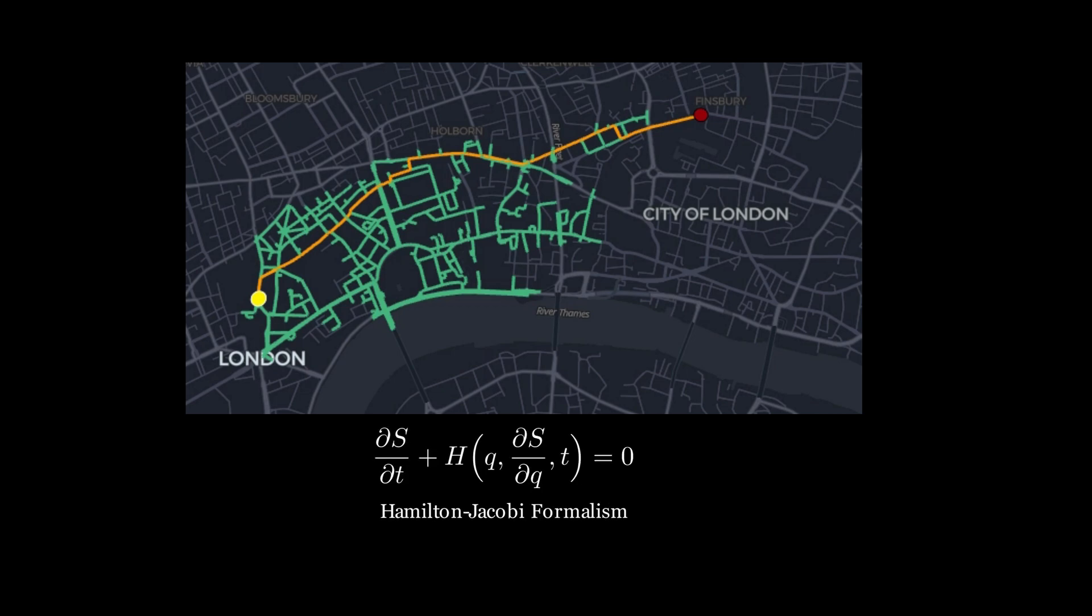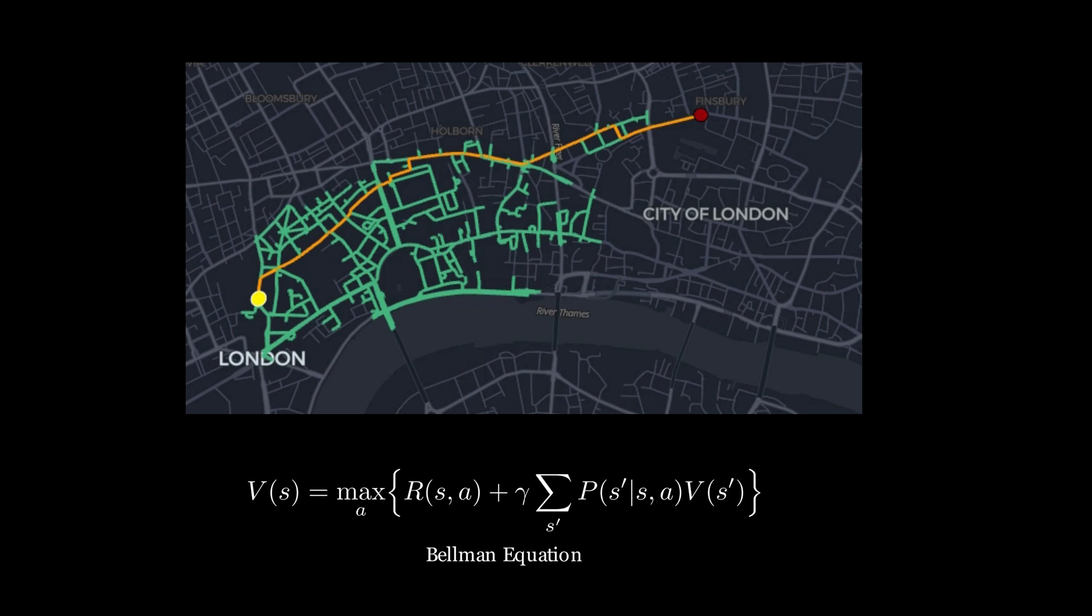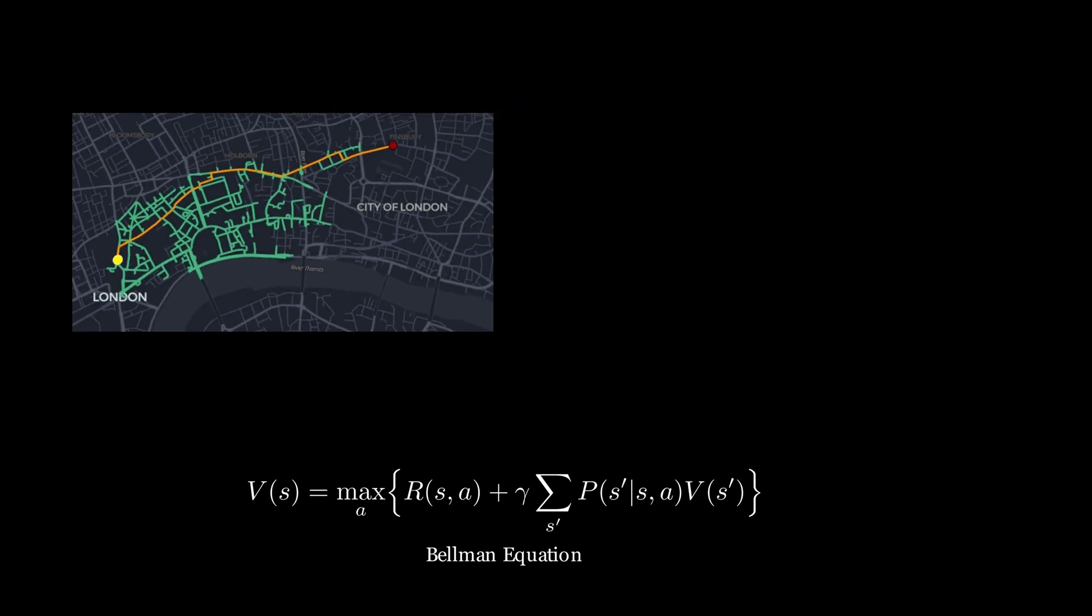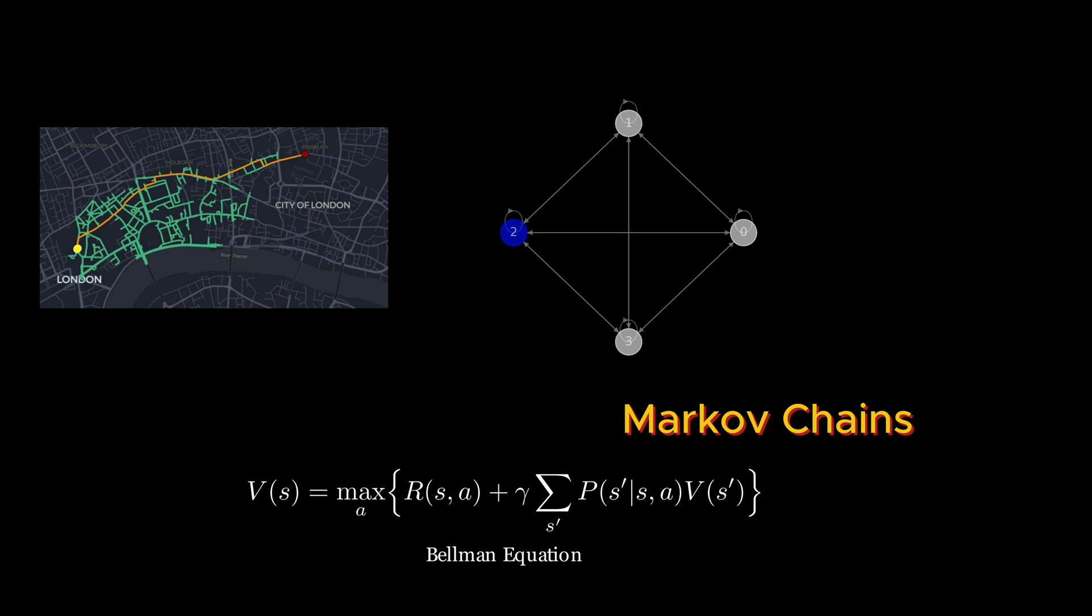But what is exactly Hamilton-Jacobi formalism? How do we start from that and derive the Bellman equation that powers AI's reinforcement learning? How do Markov chains fit into all of this? Why is reinforcement learning used to train a large language model like DeepSeek R1 or a game machine such as Google's AlphaGo? The answers lie ahead. Let's break it down.